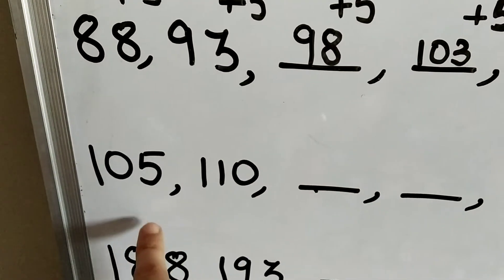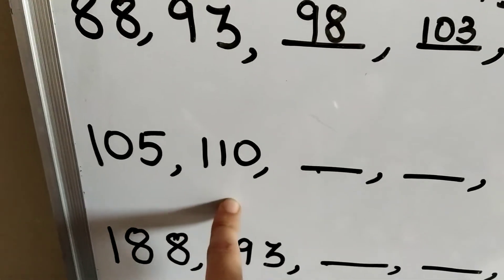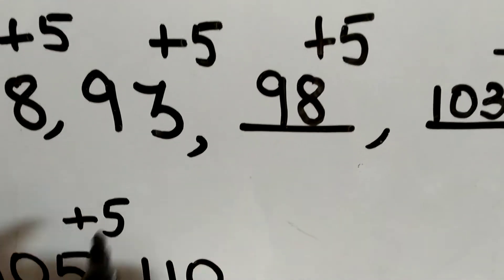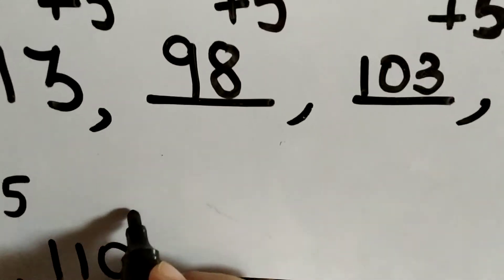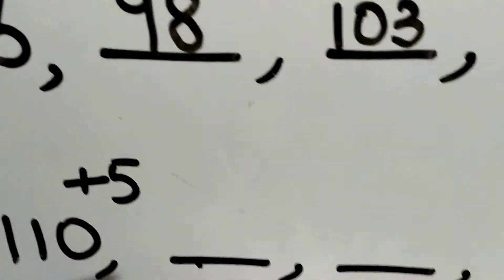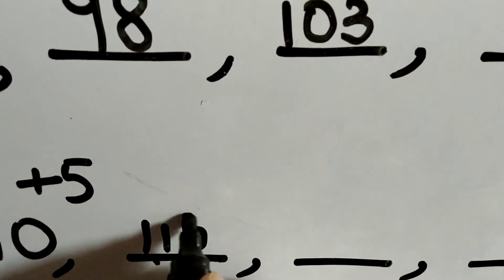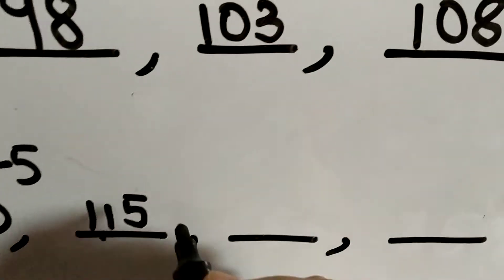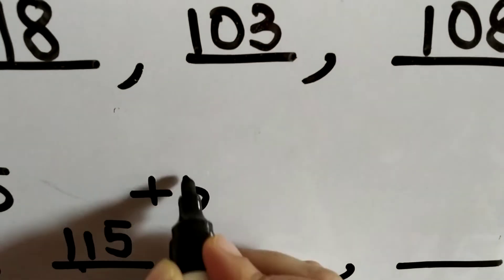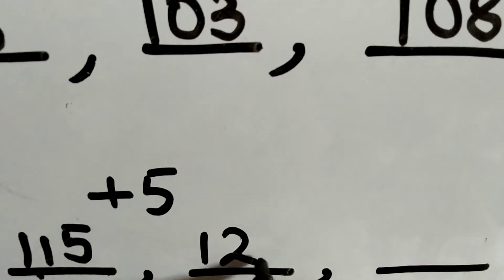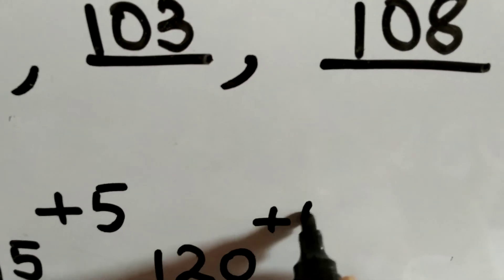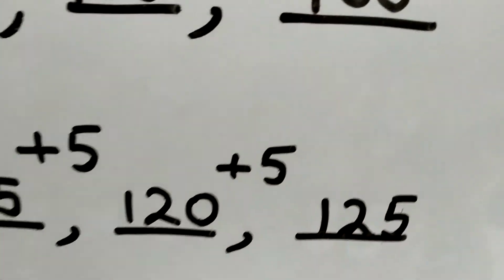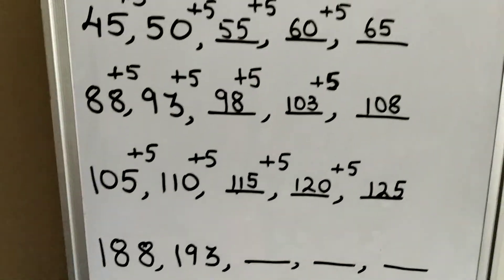Now the next question: 105 and 110 — again a gap of 5. So 110 plus 5 will be 115. Then 115 plus 5 will be 120. Then 120 plus 5 will be 125. This is how we are going to do these questions.